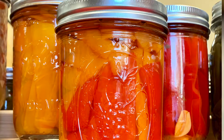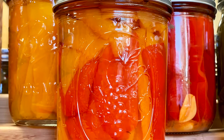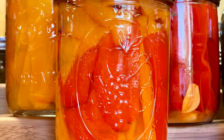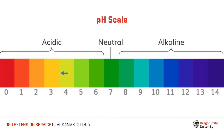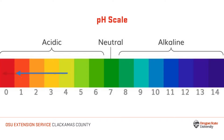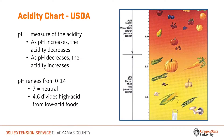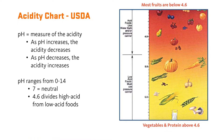A food product sold under the Oregon Farm Direct Marketing Law must have a pH value less than or equal to 4.6. According to the acidity chart, most fruits fall below 4.6, while vegetables and protein foods all fall above 4.6.